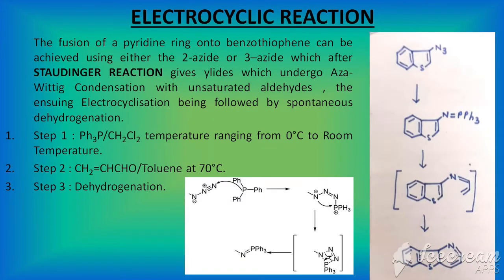Electrocyclic reaction results in the fusion of a pyridine ring into benzothiophene. The first step involves the Staudinger reaction, whose reaction mechanism — the addition of N double bond PPh3 — I have shown you in the sideways box. This is the ylide which undergoes aza-Wittig condensation through an intermediate, and finally the actual product is obtained.